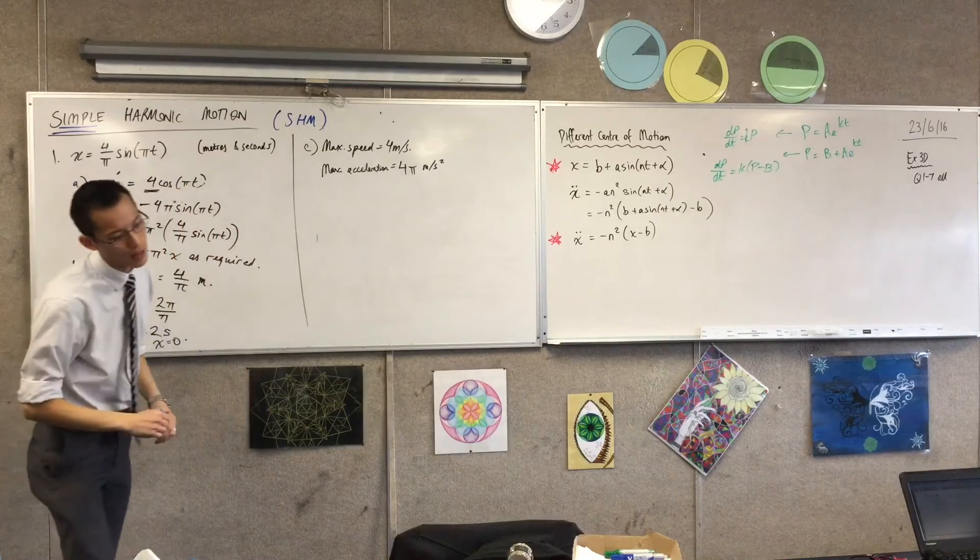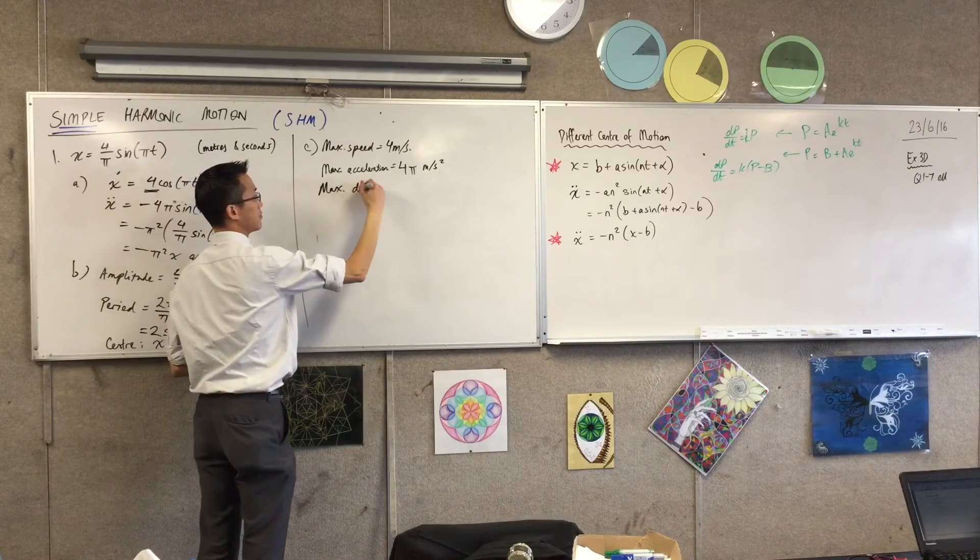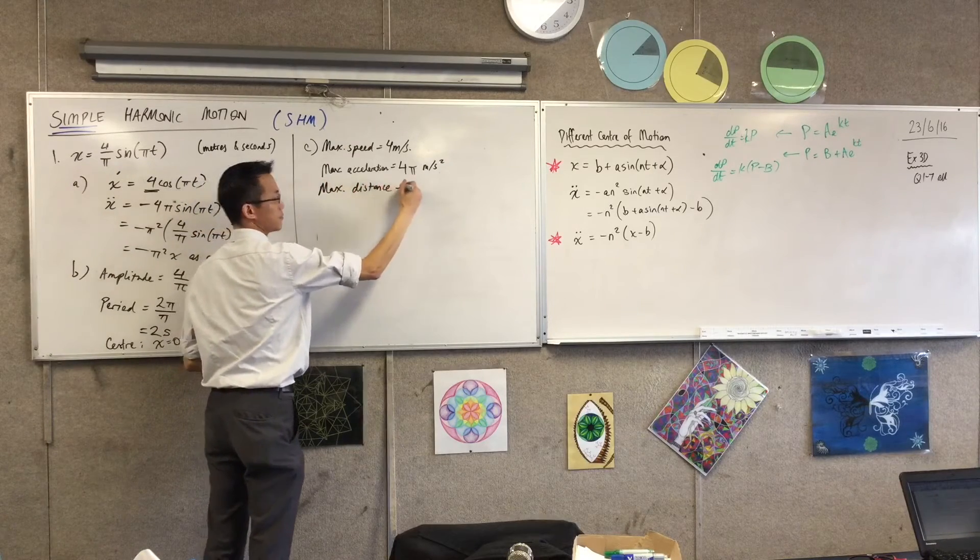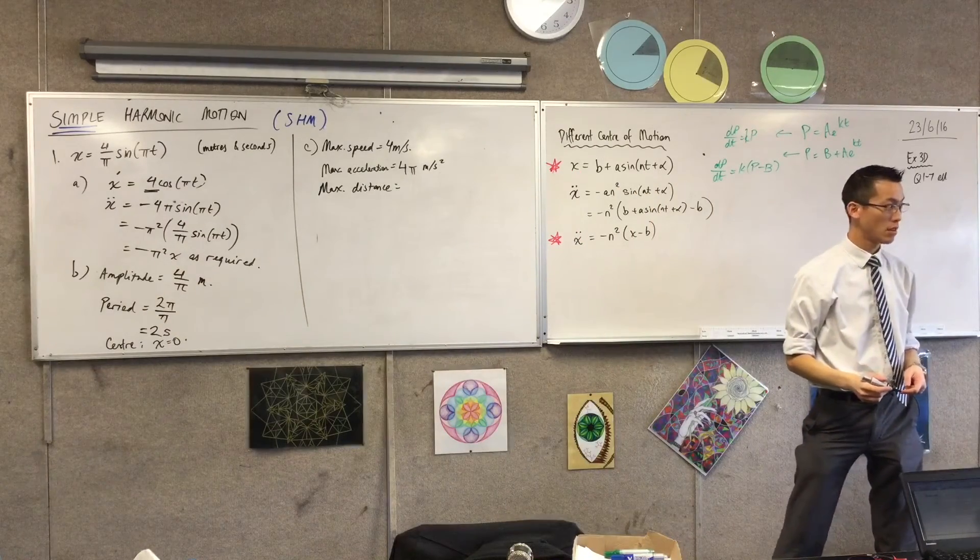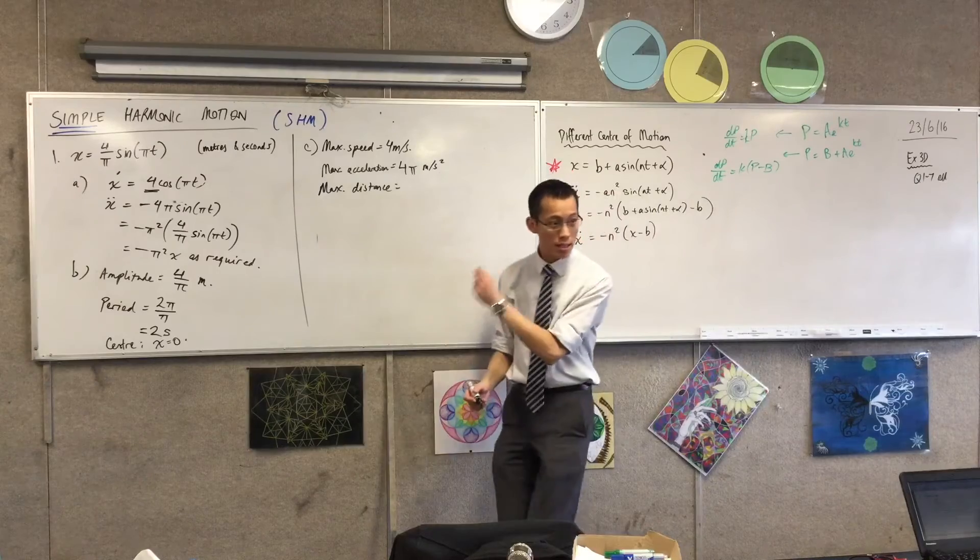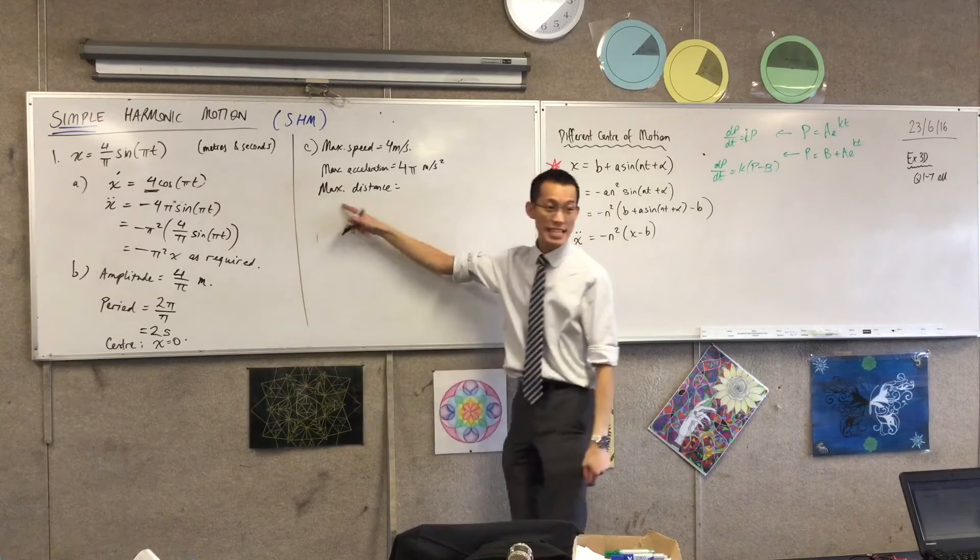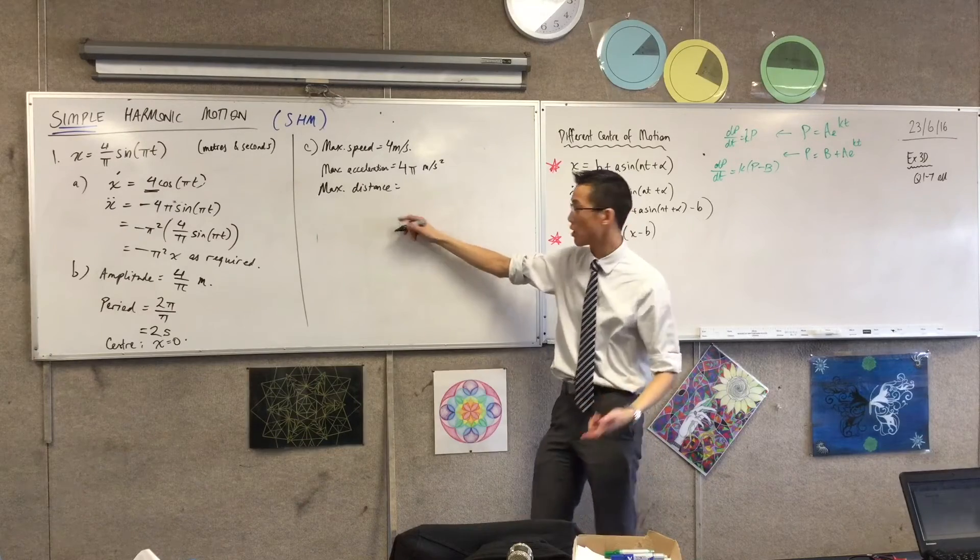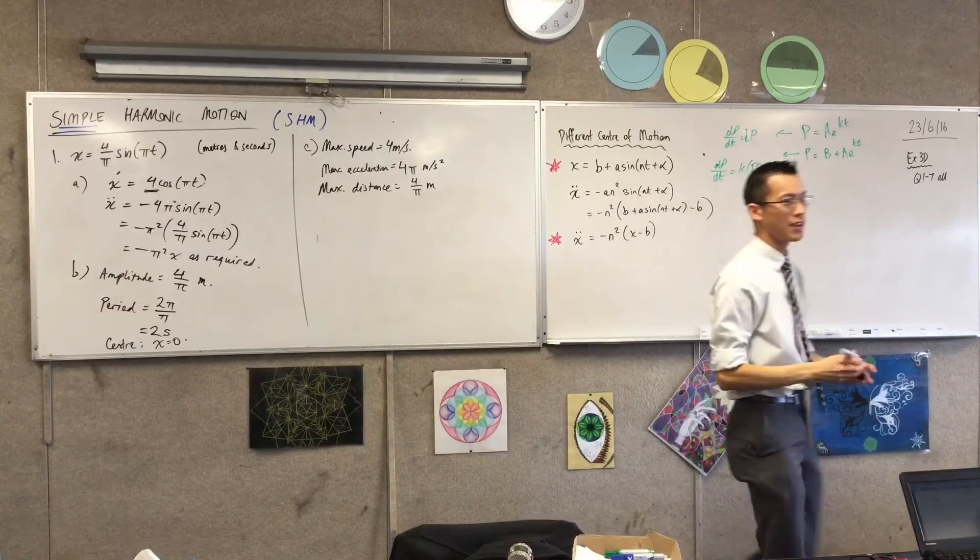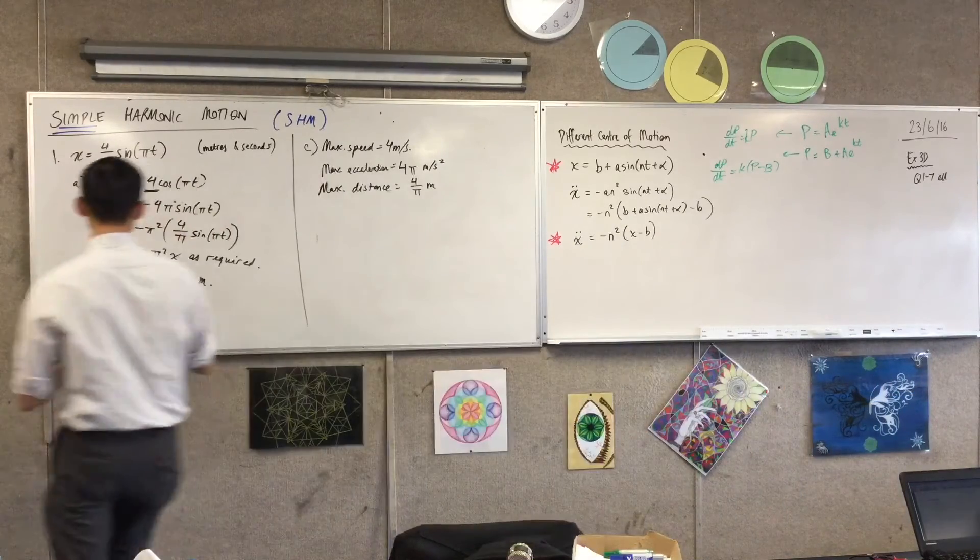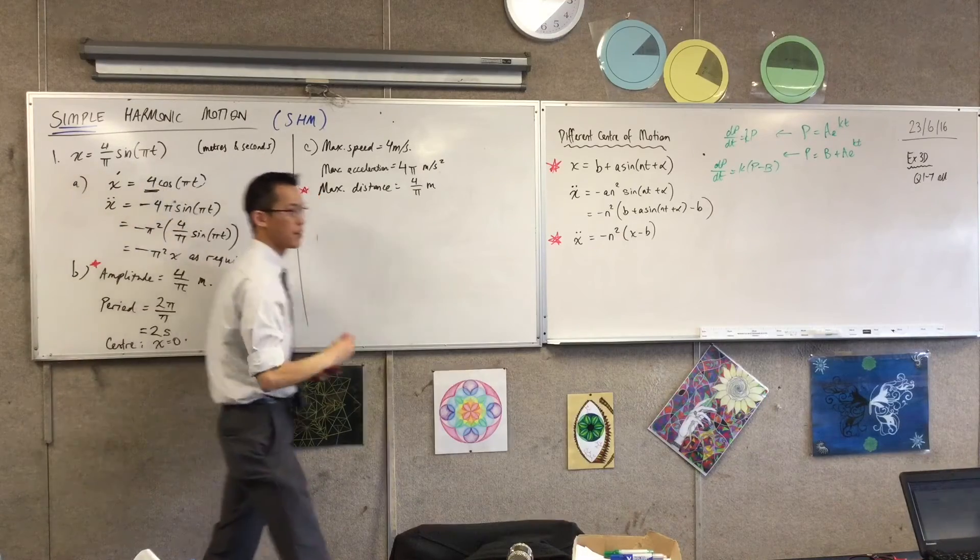And lastly, the maximum distance from the origin. Now, maximum distance, I believe we've kind of already answered this, haven't we? It's the amplitude. In this case, the amplitude of the displacement function is exactly the maximum distance from the origin. So I would just say 4 pi meters. But think with me, in what cases would the amplitude and maximum distance not be the same?